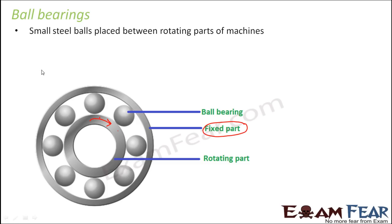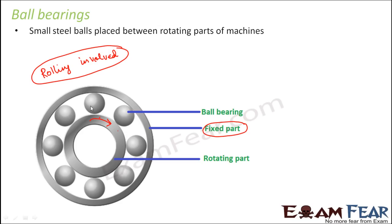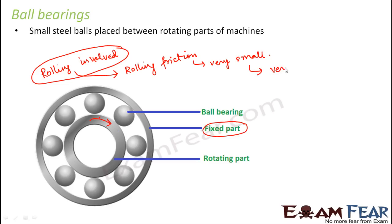When the balls are rolling, only rolling friction is involved. There is no static friction and no sliding friction - sliding friction is not there because the two surfaces are no longer in direct touch. Had the balls not been there, sliding friction would have been involved, which is much greater than rolling friction. Since rolling friction is quite small, the energy loss is also very small. This ball bearing arrangement is used in various parts of machinery to reduce energy loss.